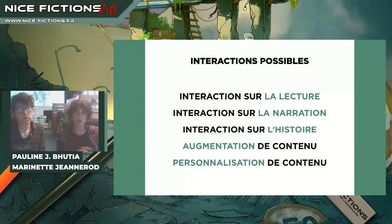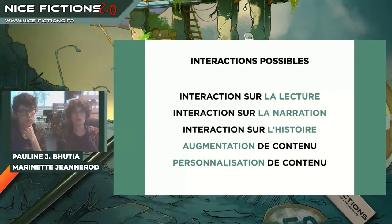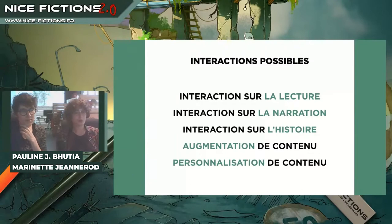Ensuite, il y a l'interaction sur la narration. La narration, c'est la manière dont le point de vue est traité. Il s'agit de pouvoir changer de point de vue au cours du déroulé d'un récit. La fiction Where or Die de Simon Buisson et Olivier Demangiel, sorti en 2015, est un bon exemple d'interaction sur la narration, puisqu'il permet de changer de point de vue entre tous les participants d'un week-end d'intégration dans le but d'élucider un meurtre. On en parlera un peu plus tard car c'est un projet incontournable.